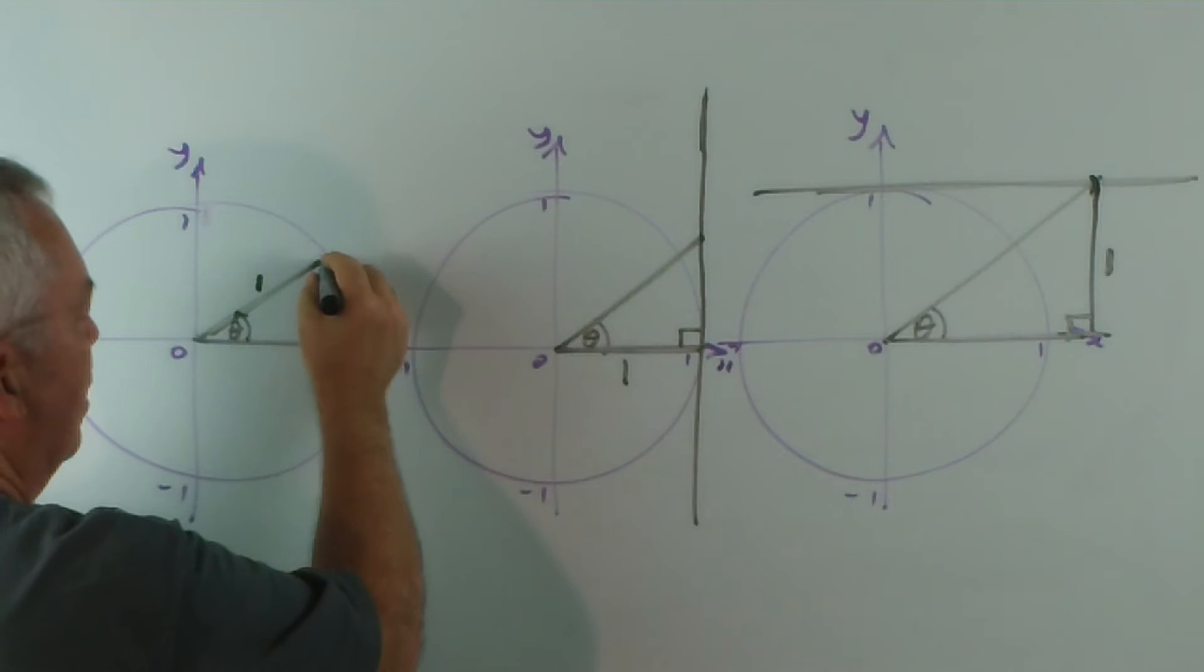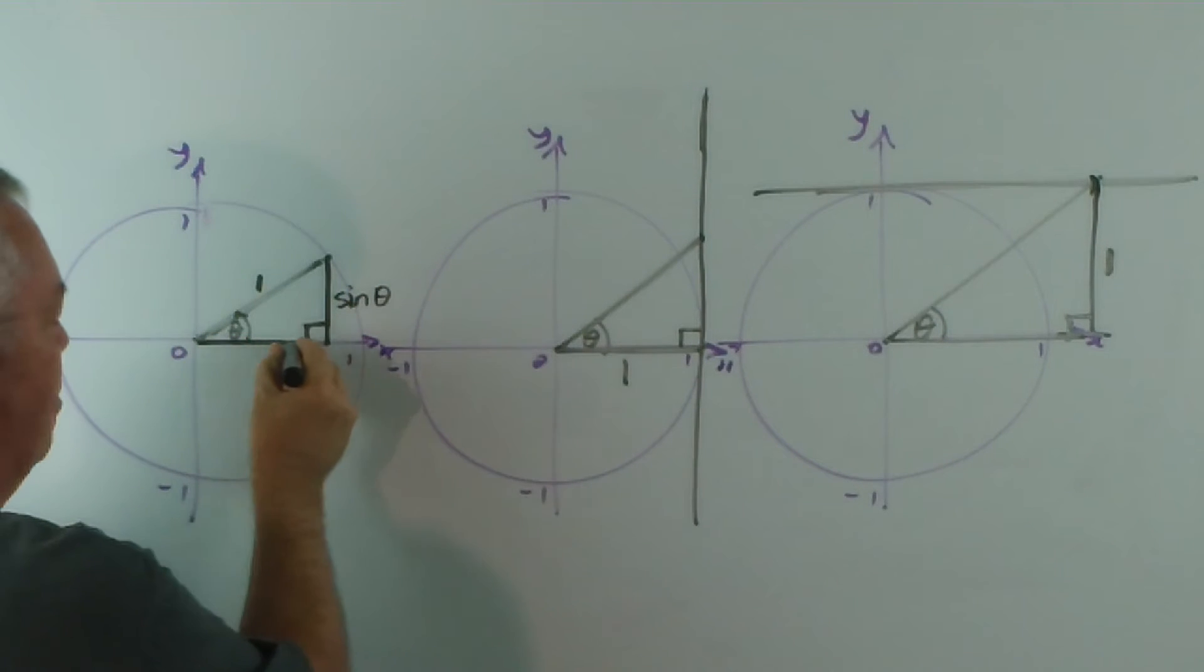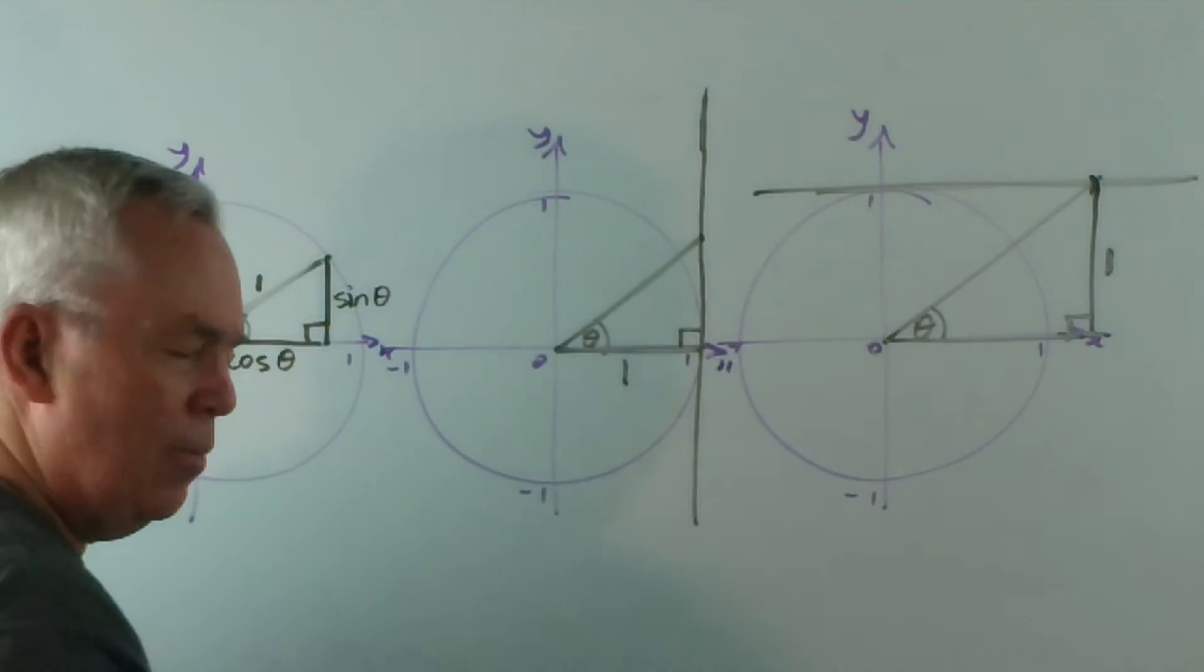In this one, the height of this triangle is sine theta. In this one, the base is cosine of theta.